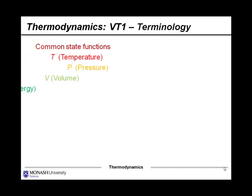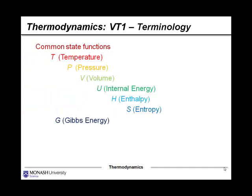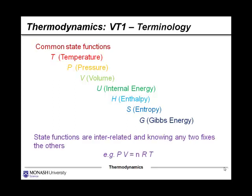State functions describe the actual distance between two points. Path functions describe the actual distance travelled. From a thermodynamics perspective, common state functions include temperature, pressure, volume, internal energy, enthalpy, entropy, and Gibbs energy — which we'll get to in video tutorials four and five. State functions are interrelated, and knowing any two fixes the others. An example is the ideal gas equation, where PV — pressure multiplied by volume — gives you the temperature, with N being the number of moles and R being a constant. So knowing any two of pressure, volume, or temperature gives you the other.